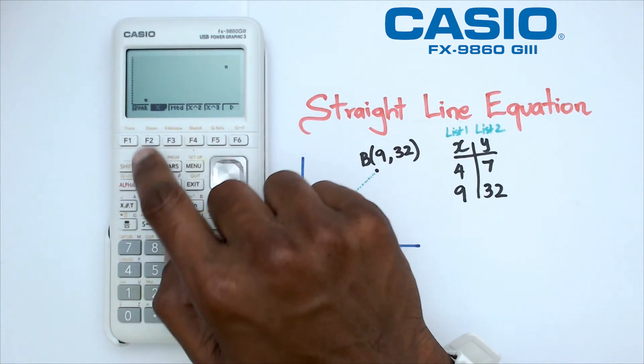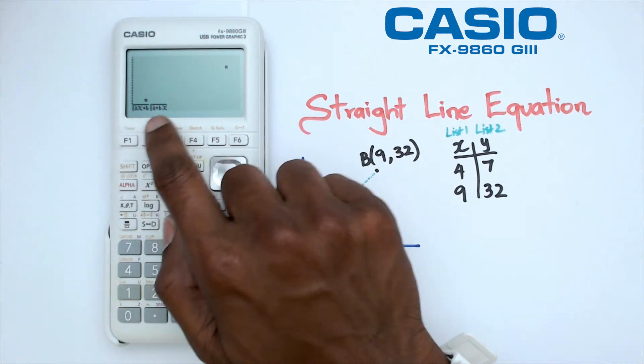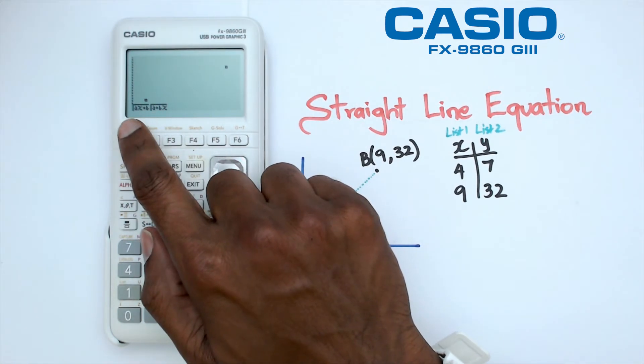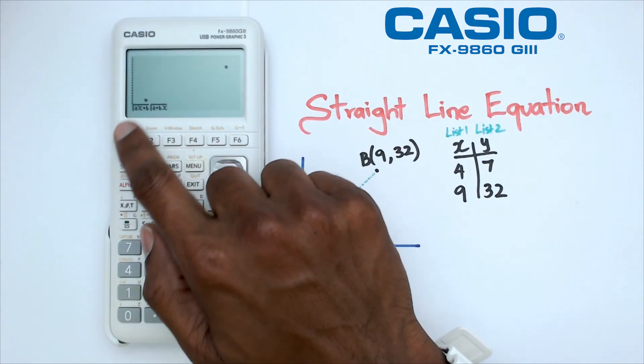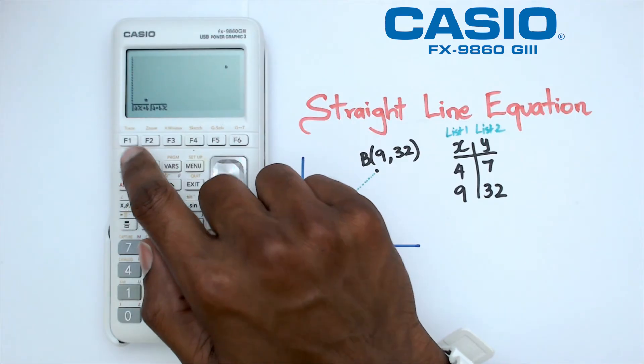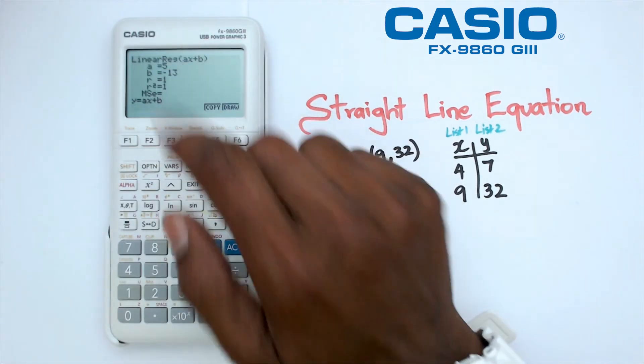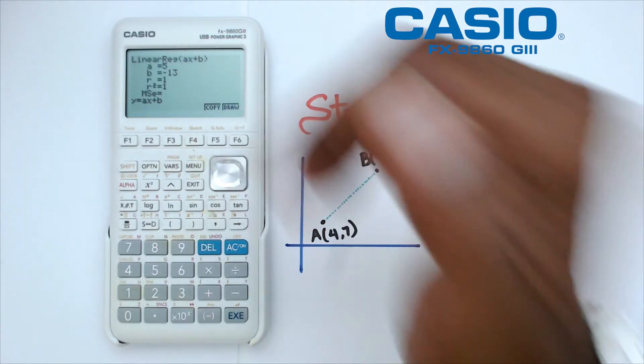We're going to click on X and when we do that we get a couple of options: aX plus B and a plus BX. The format that I like to go with is aX plus B, so I'm going to click on F1. And here are my values.